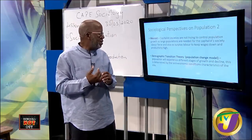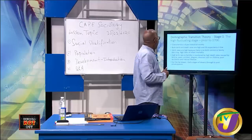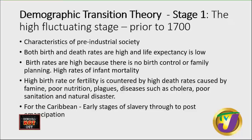Demographic transition theory is the popular one you will be asked questions on repeatedly, so we'll spend time on it. It has stages — most books have four stages, some five. Stage one, prior to 1700: characteristics of pre-industrial society. Birth rates are high because there's no birth control or family planning, and there are high rates of infant mortality.